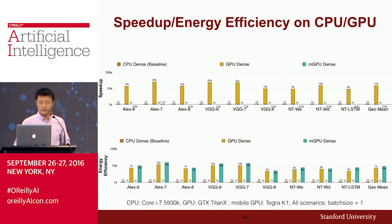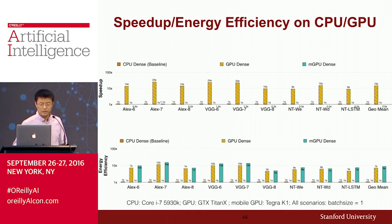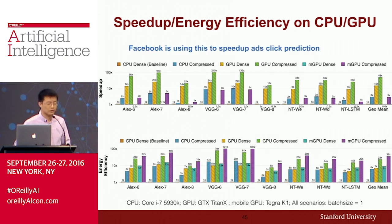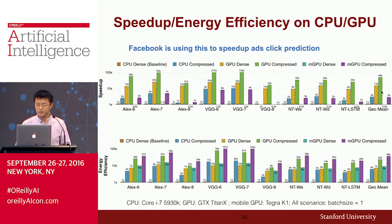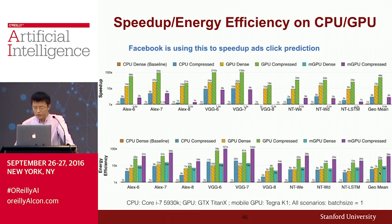This shows the speedup of running the compressed model versus the non-compressed model on CPU, GPU, and mobile GPU. On average, the speedup is roughly 3 times on CPU, GPU, and mobile GPU. The energy efficiency improvement ranges from 3 times to 6 times. But if you are not satisfied with 3x and 6x, we have a custom ASIC that can fully take advantage of this compressed network.